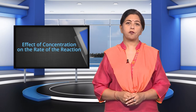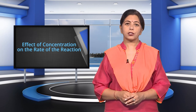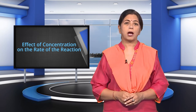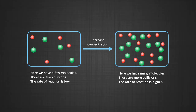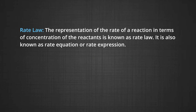First of all, the effect of concentration on the rate of the reaction. The rate of a chemical reaction at a given temperature may depend on the concentration of one or more reactants and the products. It is found that the concentration of the reactants decreases while the concentration of the products increases with the passage of time. The representation of the rate of the reaction in terms of the concentration of the reactants is known as rate law, also known as rate equation or rate expression.